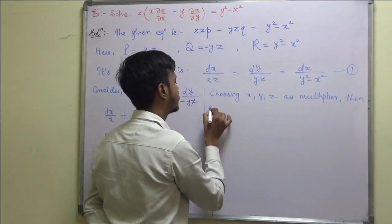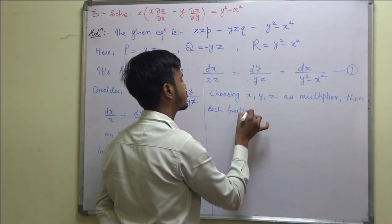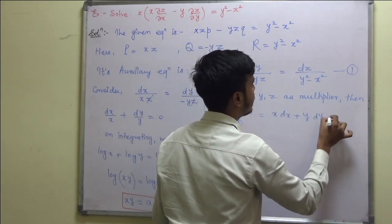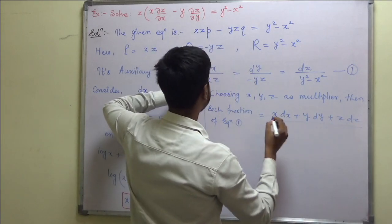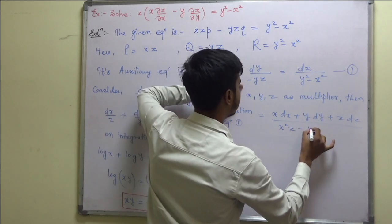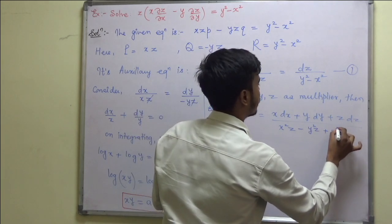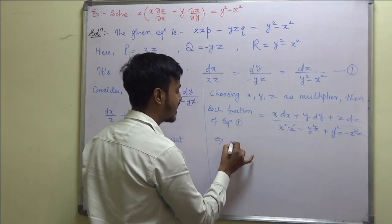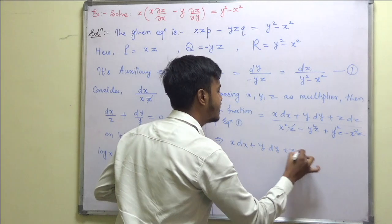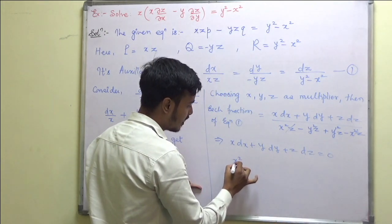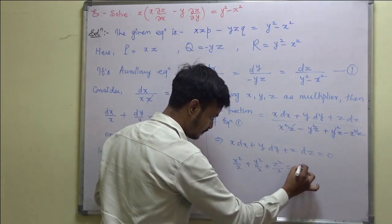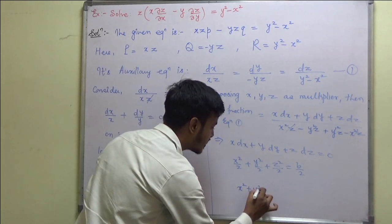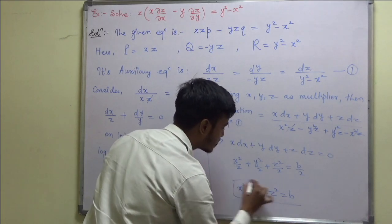Each fraction equals (x·dx + y·dy + z·dz) upon (x²z - y²z + y²z - x²z). The denominator is zero, which implies the numerator is zero. So x·dx + y·dy + z·dz = 0. Integrating gives x²/2 + y²/2 + z²/2 = constant. Removing the factor of 2, we get x² + y² + z² = b as the second integral.